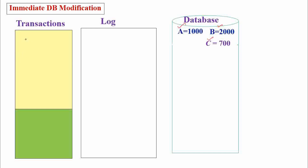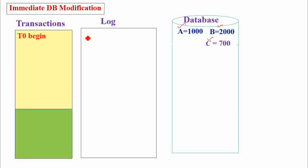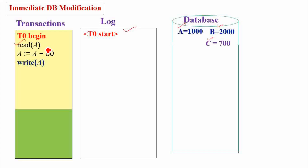When the first statement in T0, which is T0 begin, is executed, immediately the T0 start record is recorded into the log. Since a read operation does not disturb the consistency of the database, no record is required in the log. When a write operation is performed, it updates the value of the database, so the corresponding update record must now be made into the log.